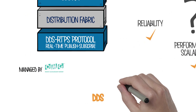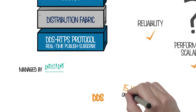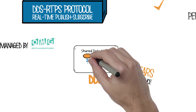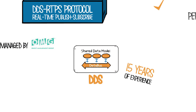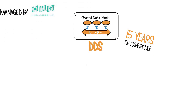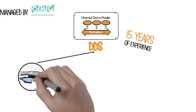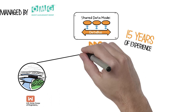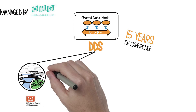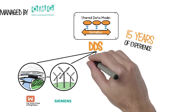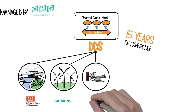Over the last 15 years, the DDS standard has been successfully deployed in many real-world systems using architectures like the IIRA. Successful DDS-based system designs in production today include the Grand Coulee Dam, the largest power plant in North America; Siemens Wind Power, the world's largest wind turbine manufacturer; and GE Healthcare, the world's largest medical imaging company.